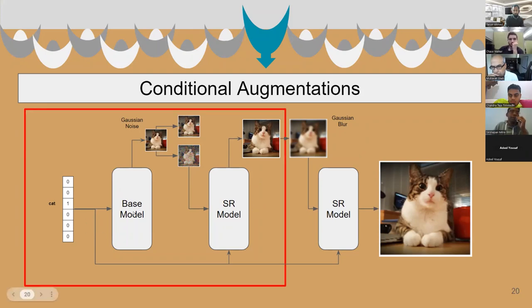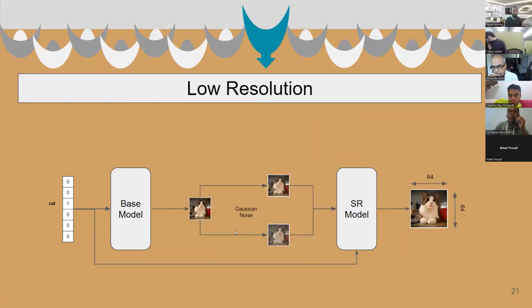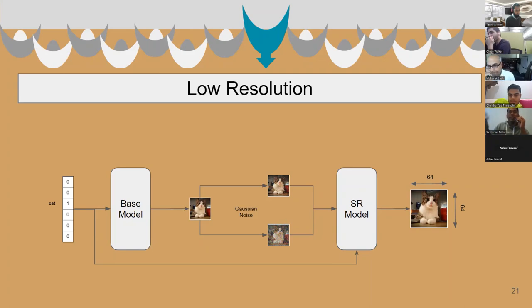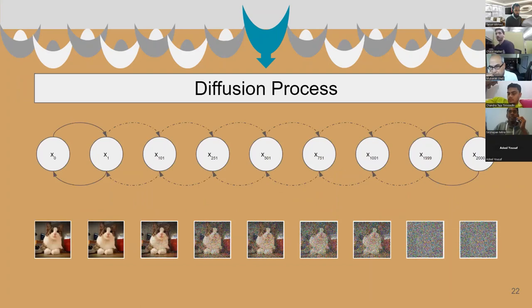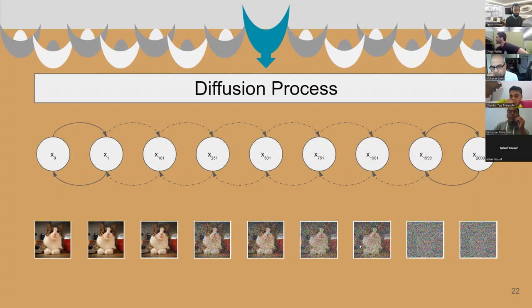First, let's concentrate on the base model and first super-resolution model. This generates a low-resolution 64x64 image, and the authors find that adding Gaussian noise as a conditional augmentation helps. Adding Gaussian noise is very common to us because we just do that in the diffusion forward process. The interesting thing would be if we can use those noisy samples as the augmented samples. Let's see how the authors do that.